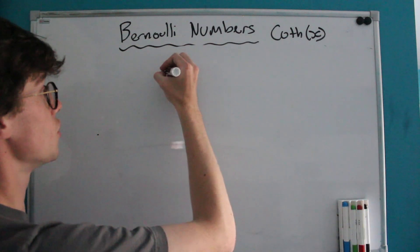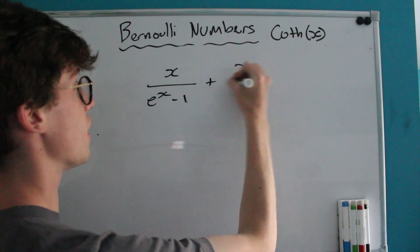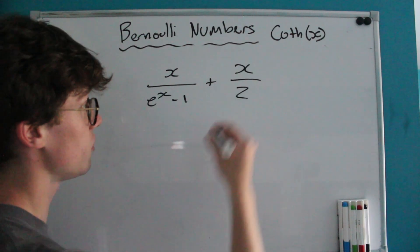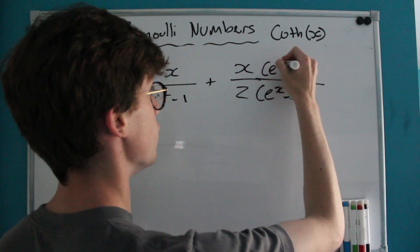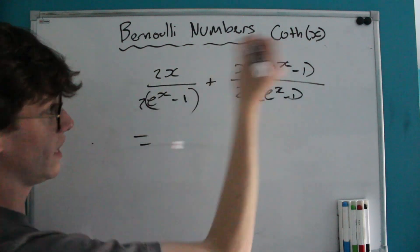Let's first consider how this function simplifies: X over e^X minus 1 plus X over 2. The first thing we're going to do is create a common denominator, which is quite simple. We'll multiply by e^X minus 1 on both sides over here and multiply by 2 over here.